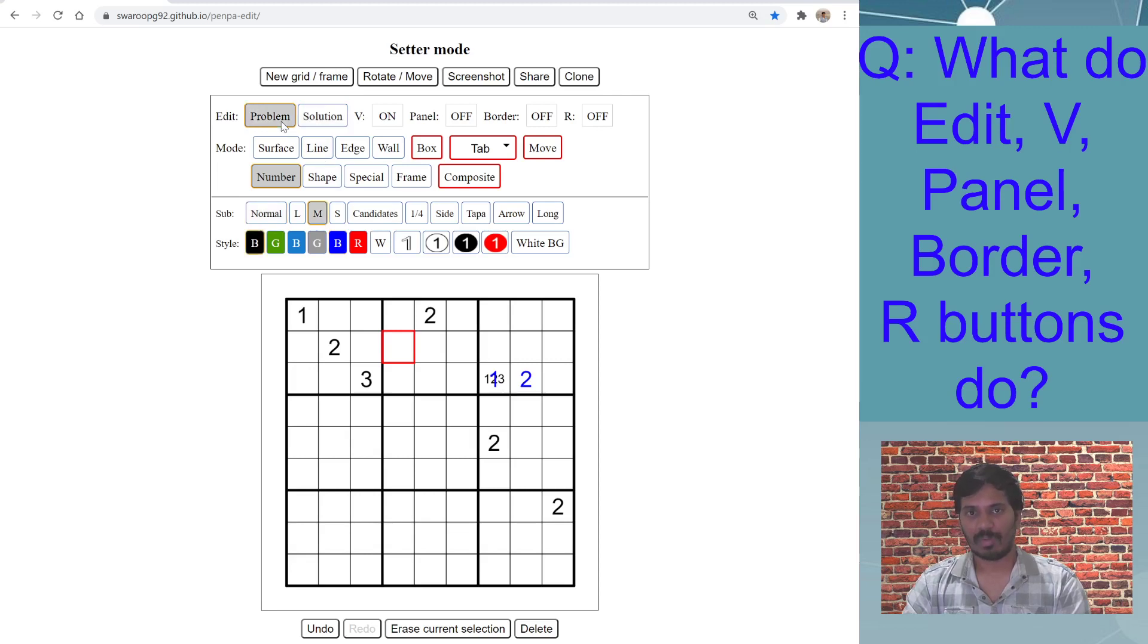In the Problem mode, I can use this visibility button, which basically says to visualize solution in the Problem mode. And now you can see that in the Problem mode you are seeing both the digits you entered previously and the digits you entered while in the Solution.